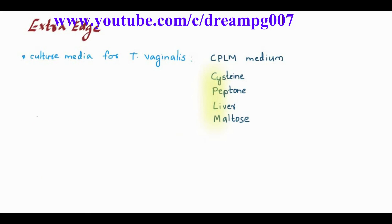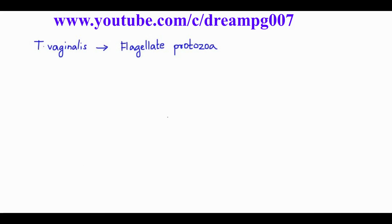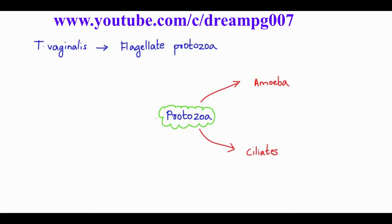Besides trichomonas vaginalis, the cystic stage is also absent in entamoeba gingivalis and dientamoeba fragilis. Trichomonas vaginalis is a flagellate protozoa. Protozoa has mainly three categories: amoeba, ciliates, and flagellates. Trichomonas vaginalis belongs to the flagellates group.